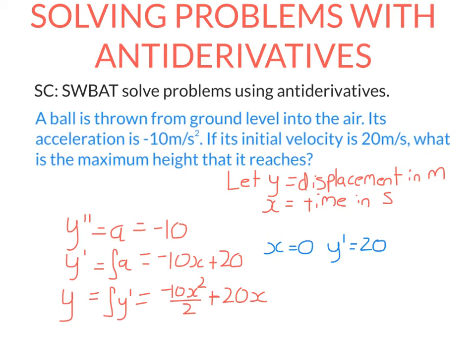Now here, I do need to add a constant. But because it's thrown from ground level, that means when x equals 0, y equals 0. Because the displacement, the height above ground, is 0. So I can just get rid of this c here because it's 0.